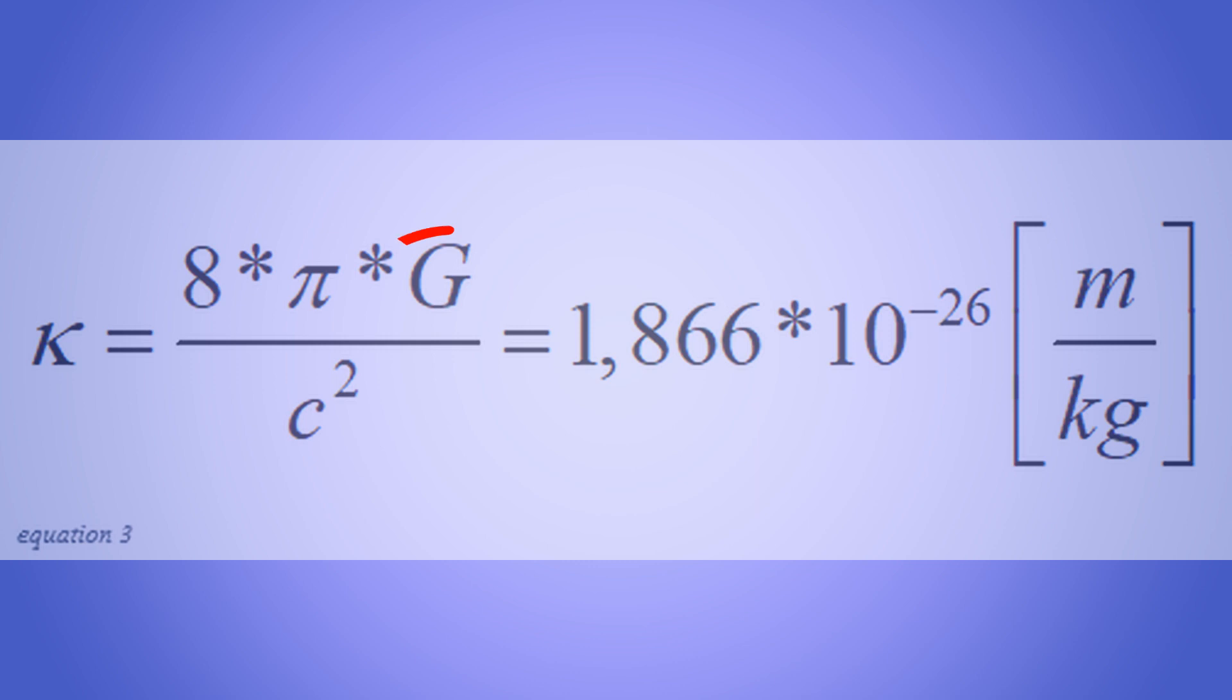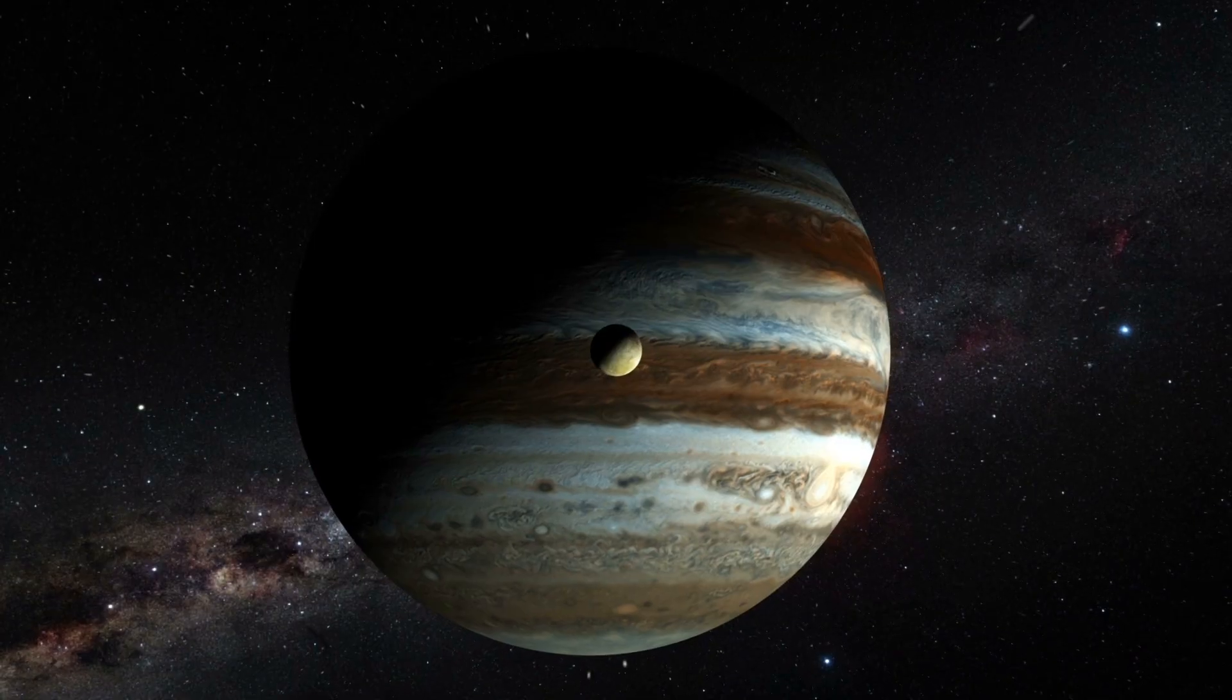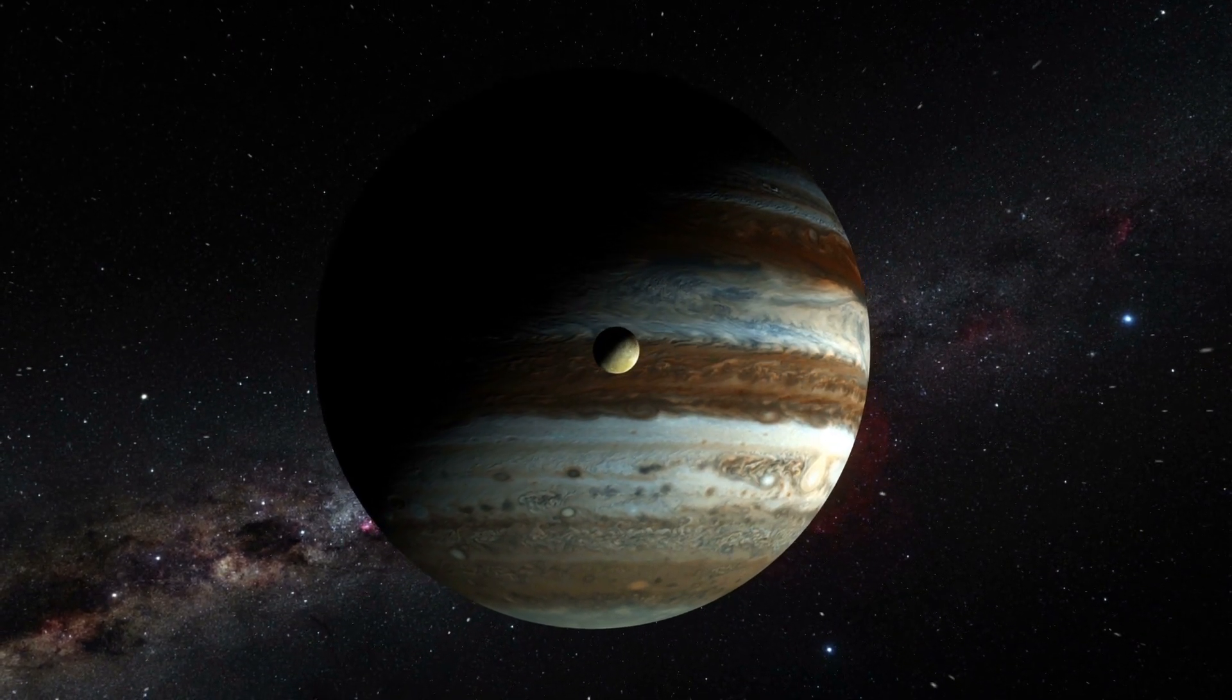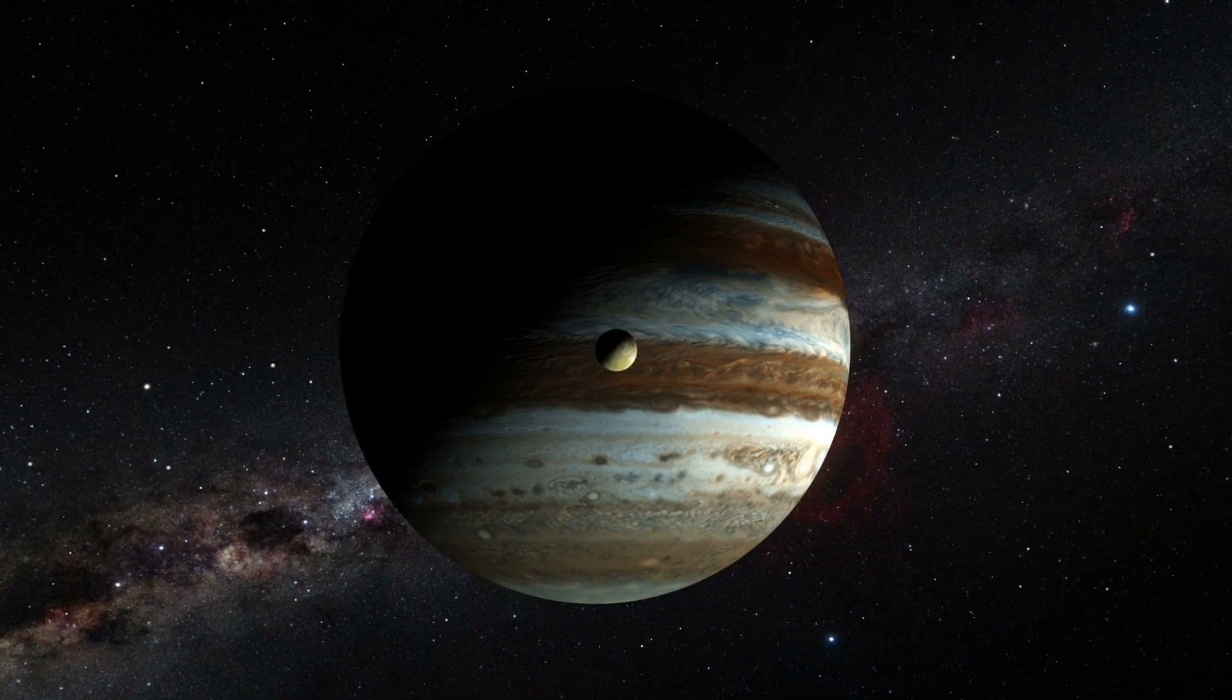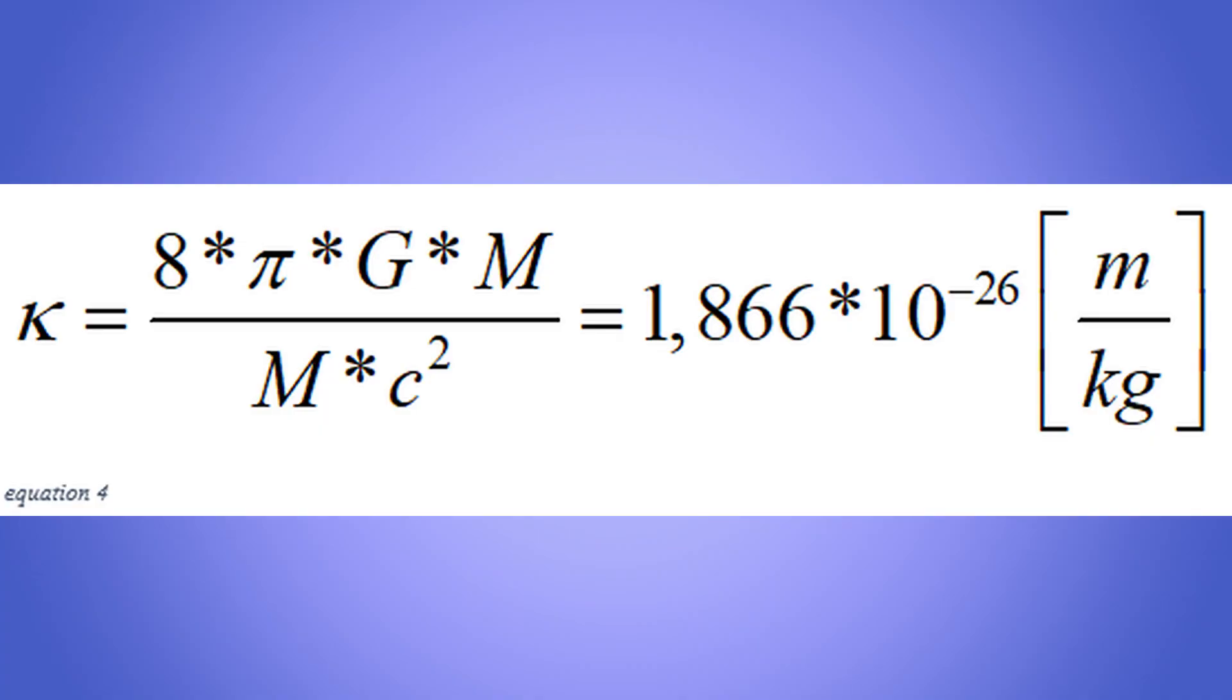Because in this equation we find G, the gravitational constant of Newton, I presume that this equation tells us about mass. So I add a mass m in numerator and denominator.